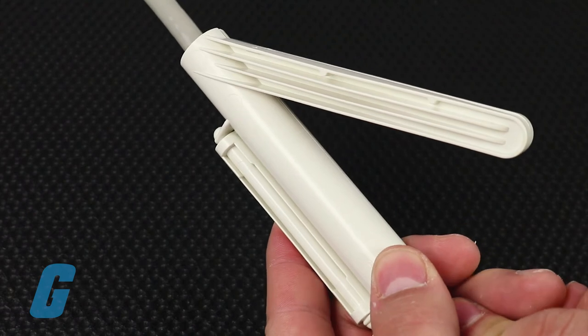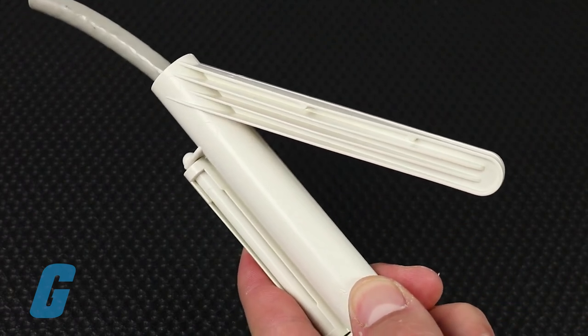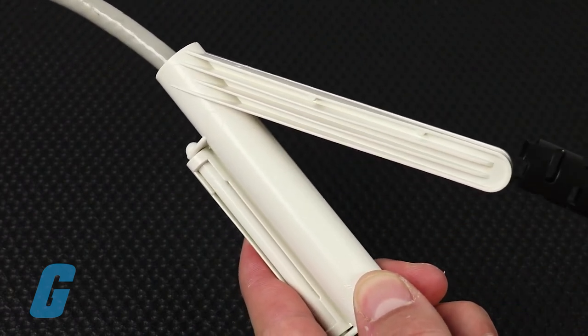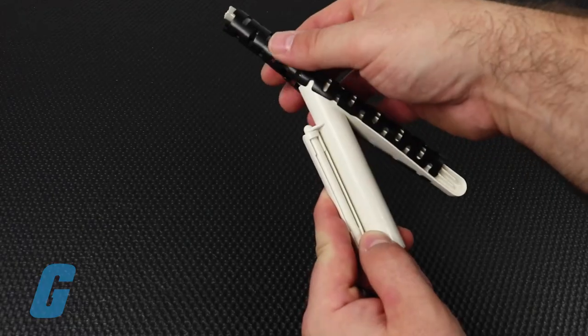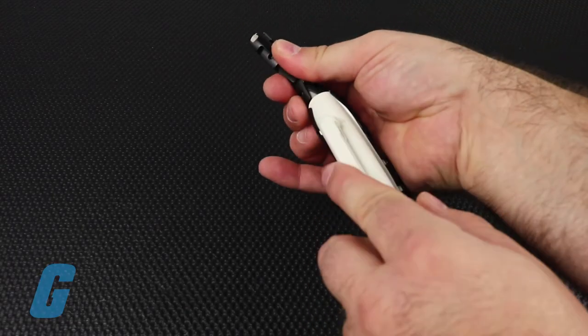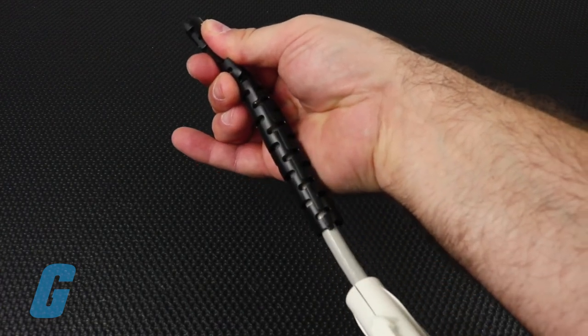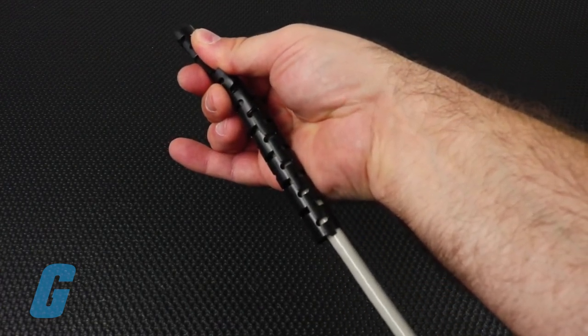Slide the Pan Wrap Split Harness Wrap onto the end of the tool until approximately 3 inches of it covers the bundle, and then grasp the end of the Pan Wrap Split Harness Wrap and bundle while pulling the tool along the bundle length.